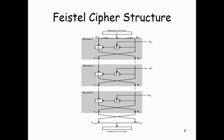All the sub-keys are related to the original key. The permutation step at the end of each round swaps the modified L and unmodified R, so L for the next round will be R of the current round, and R for the next round will be the output L of the current round. These substitutions and permutation steps form a round, and the number of rounds may be 16 or any number specified by the algorithm. Once the last round is completed, the two sub-blocks L and R are concatenated to form the ciphertext.